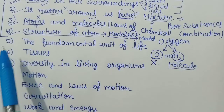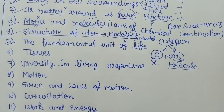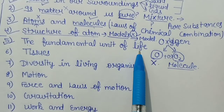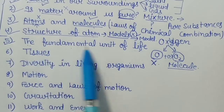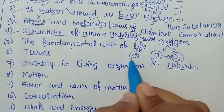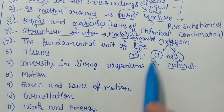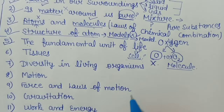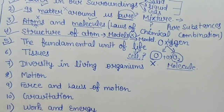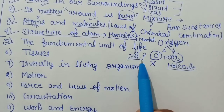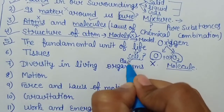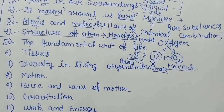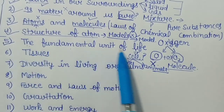यहां तक chemistry का portion है। Chapter number 5 से start हो जाती है हमारी biology, और जो first chapter in biology — that is The Fundamental Unit of Life. हमारे जीवन की fundamental unit क्या है — we will find it is a cell. यह battery वाले cell नहीं, remote वाले cell नहीं — यह हमारे living organisms का basic, fundamental unit है। इसके बारे में हम पढ़ेंगे, और देखेंगे कि plants में और animals में cell same रहती है या नहीं, इनकी functioning कैसे होती है।